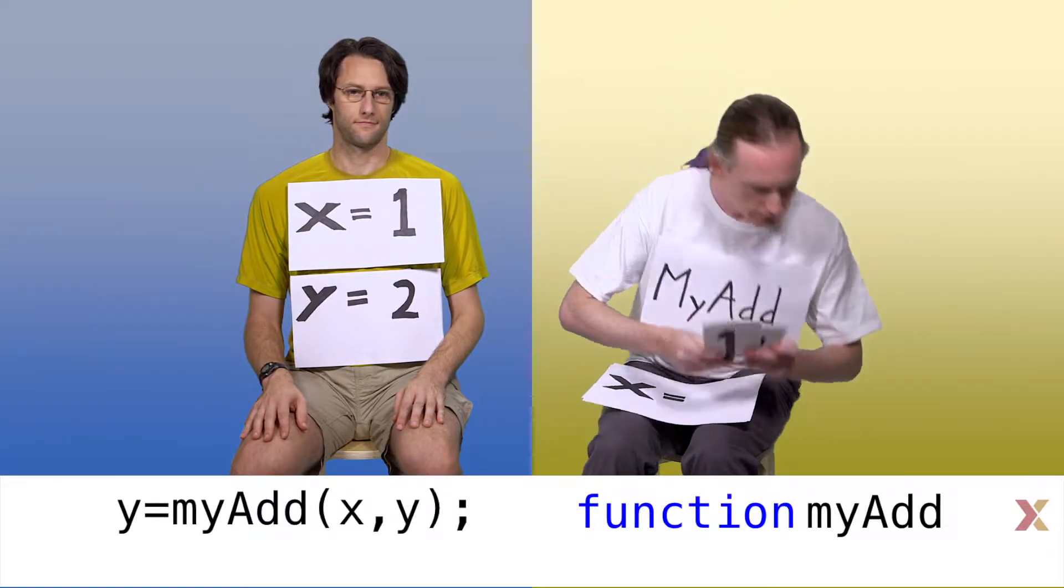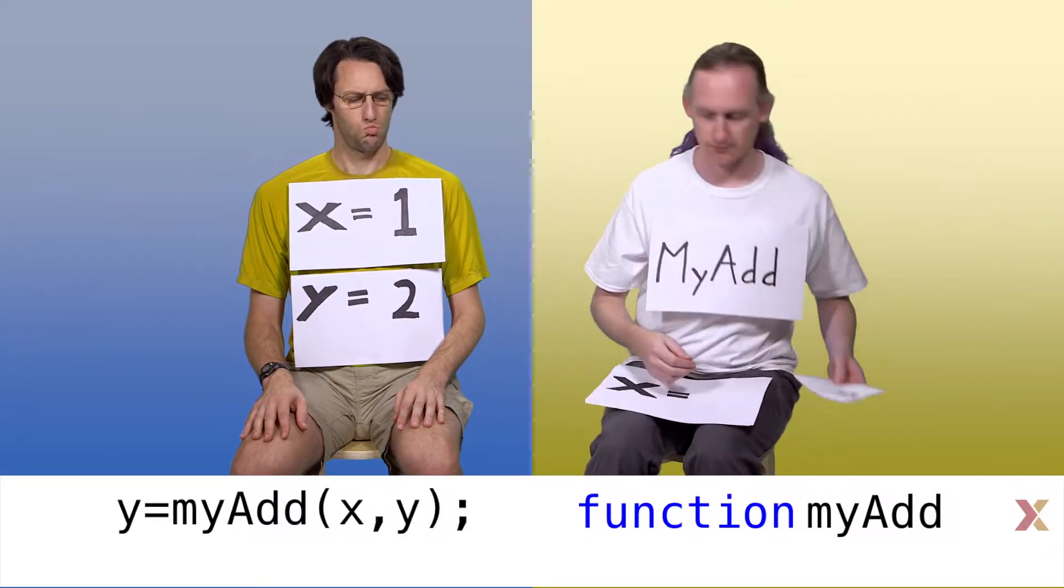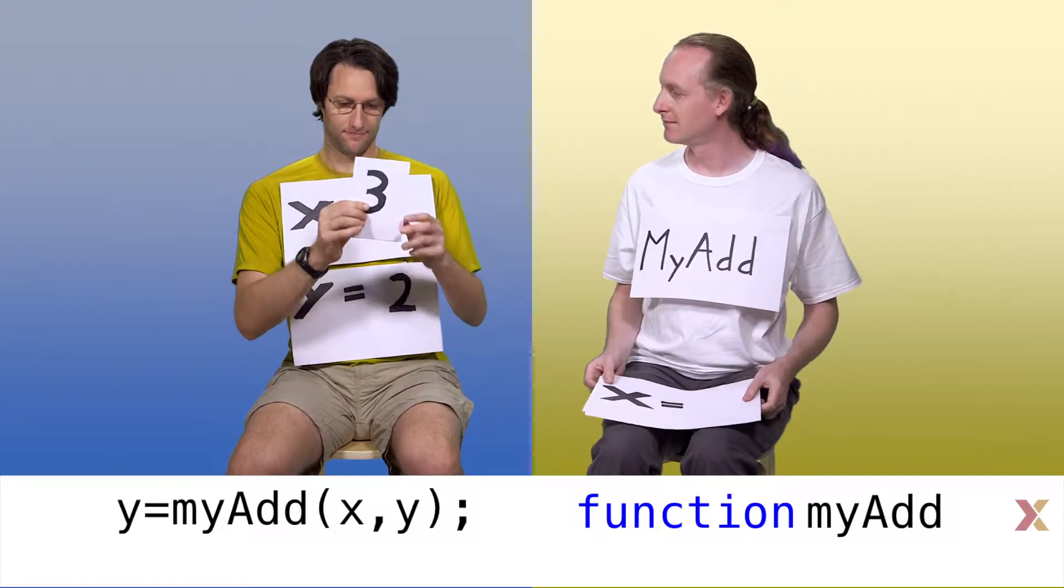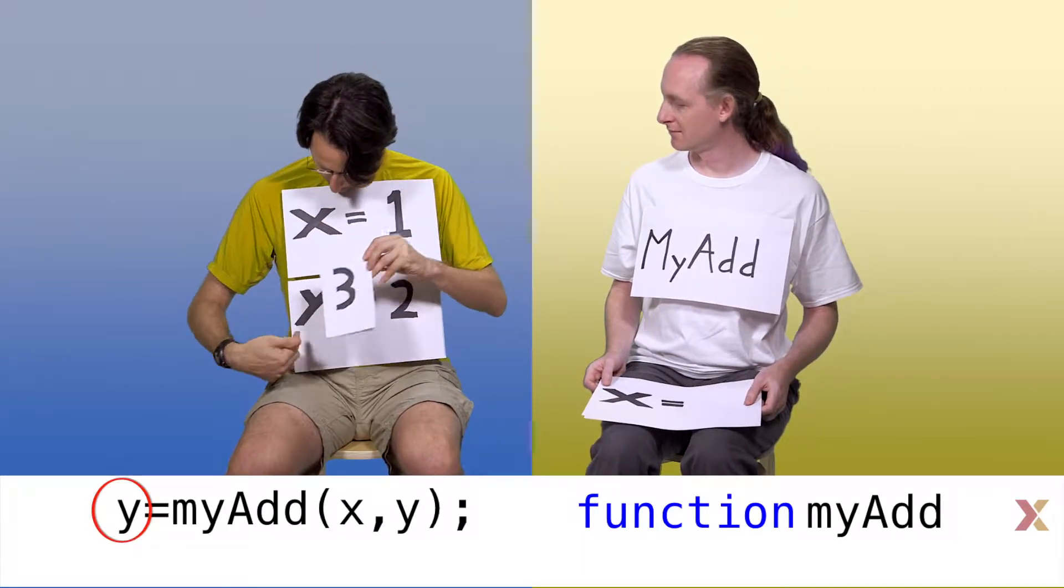When the function is done, it can return values. In this case, the function returns a single number and the script stores the number that the function returned in the variable y. And now we're done.